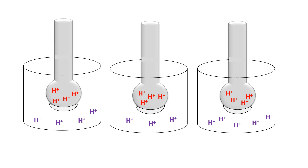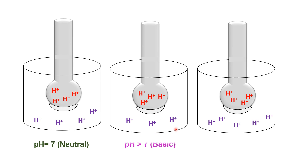How does a pH electrode record a solution as acidic, basic, or neutral? The hydrogen ion concentration inside the probe has a fixed value, while the external solution has a variable hydrogen ion concentration. If the number of hydrogen ions inside the probe equals those outside, the solution is recorded as neutral with pH 7. If the number of hydrogen ions inside the probe is greater than outside, the solution is recorded as basic with pH greater than 7.